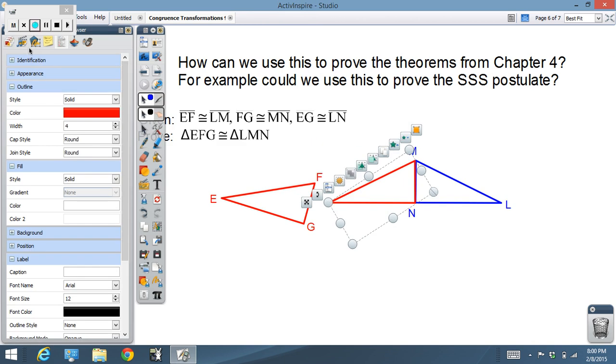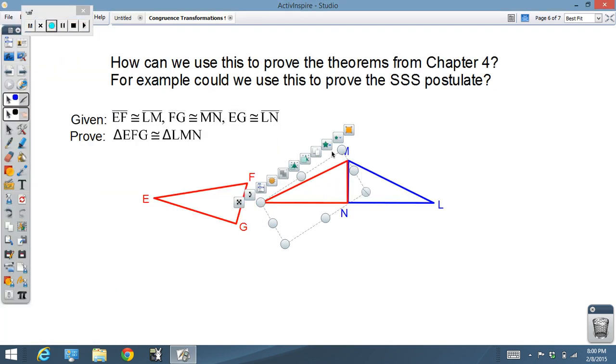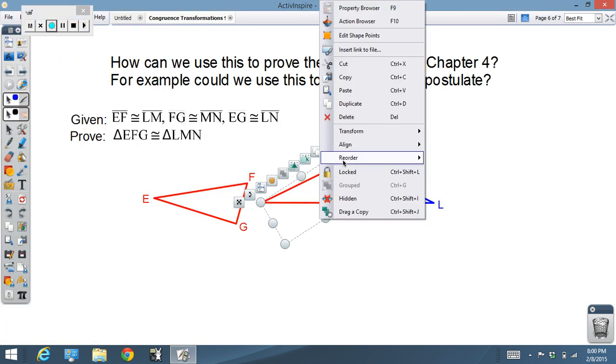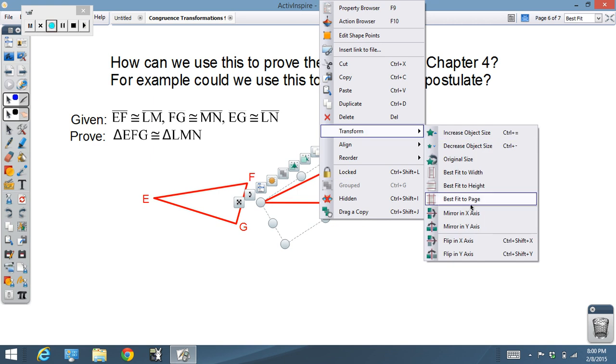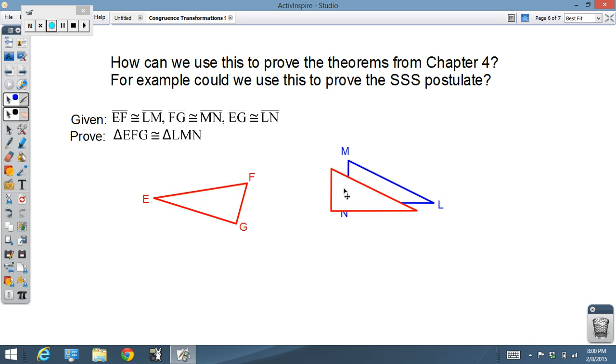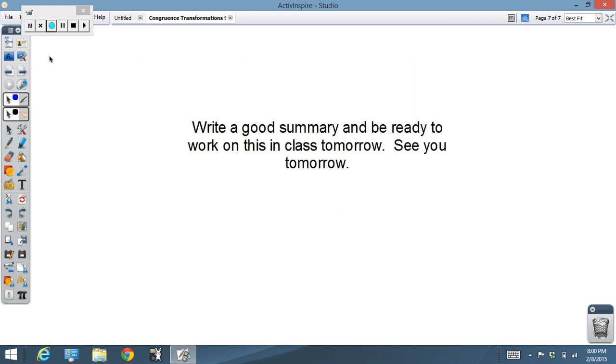Then I'm going to do a reflection and move it over there. And we have definitely proven that if three sides of a triangle are congruent, we can map one figure onto the other. Therefore, the two triangles must be congruent. And, that's where we're going. Have a good day. I'll see you guys later.